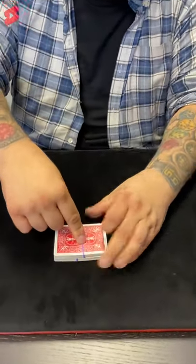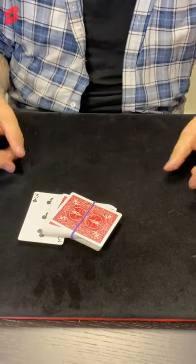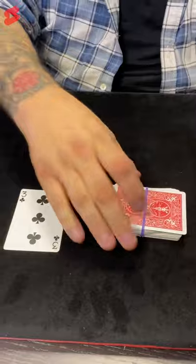Now watch this, I'm just going to push down, and what was the card you named again? Three of Clubs. Check this out, one, two, three. There it is. Flying out the deck, the three of Clubs.